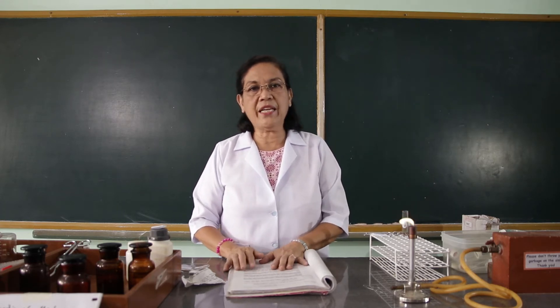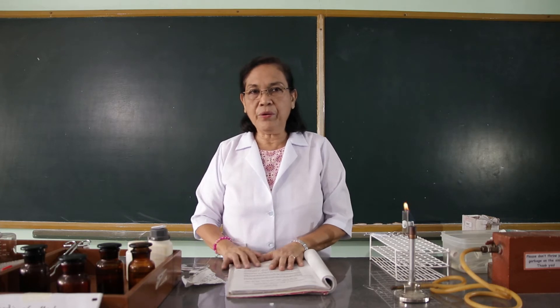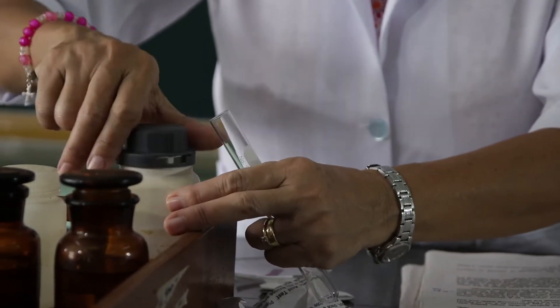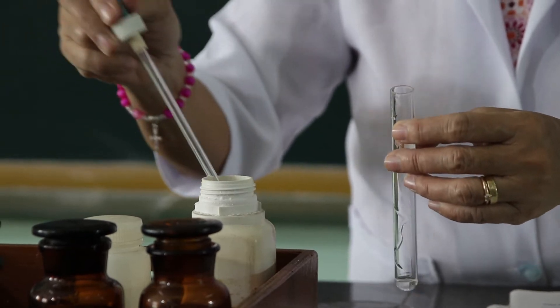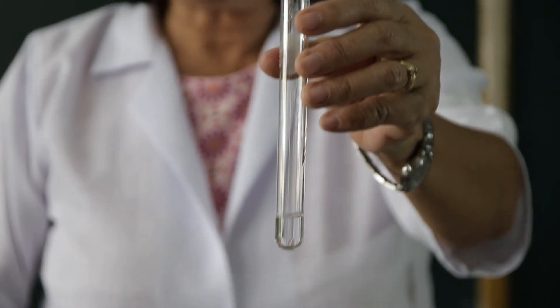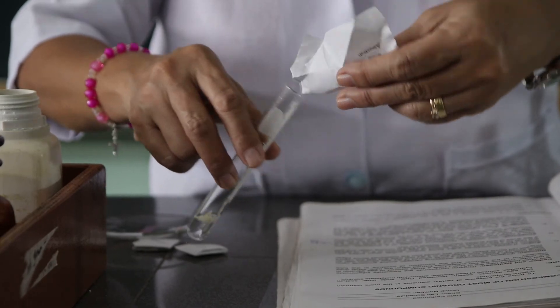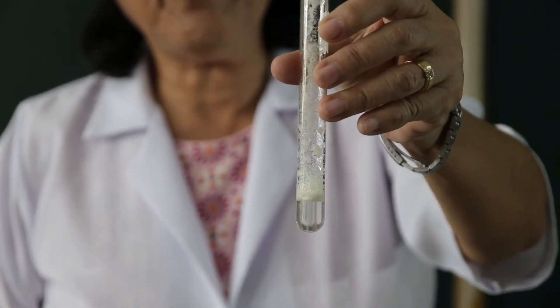The next procedure for this activity or experiment is test for the presence of sulfur. We are going to add a small amount of egg albumin to sodium hydroxide and we are going to heat it for a few minutes. And after heating, we are going to cool the mixture and add some drops of lead acetate. This is sodium hydroxide and we are going to add into this a small amount of egg albumin. So this is the mixture of the egg albumin and the sodium hydroxide.